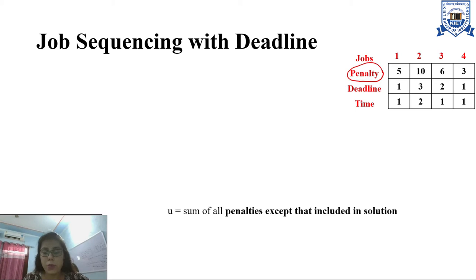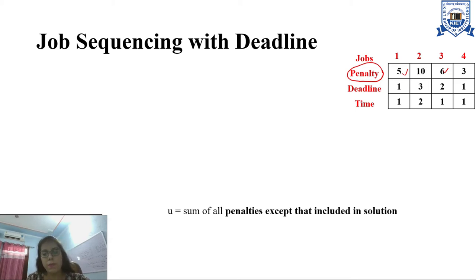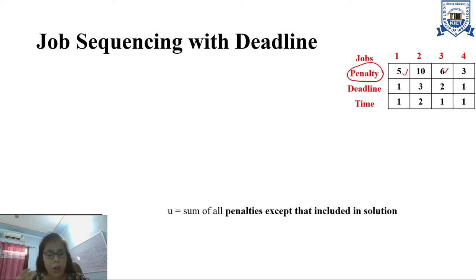The first parameter is U. U gives the sum of all penalties which are not part of the solution. Say if I have not considered job 1 and job 3 with penalties 5 and 6, the penalty sum is 11. So up till a point, whatever jobs I have included in my solution, the sum of the remaining penalties acts as an upper bound. The upper bound tells me that beyond this point, I am not going to incur any more penalties, because we have taken the sum of all remaining penalties. In any case, my penalty will not go higher than that.